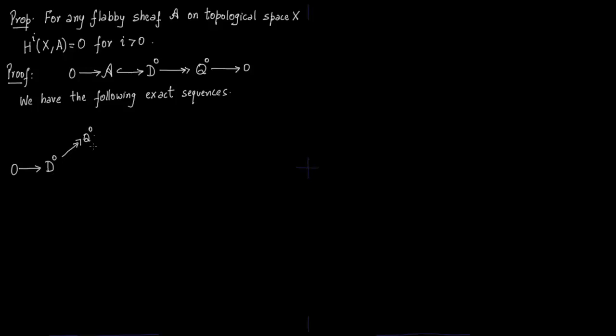From Q0 you form the sheave of discontinuous sections of Q0. So Q0 embeds into it, that is called D1. The map from D0 to D1 is the composition of the map from D0 to Q0 and Q0 to D1.